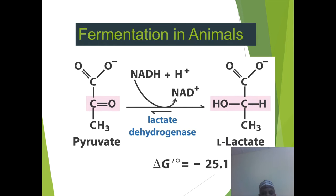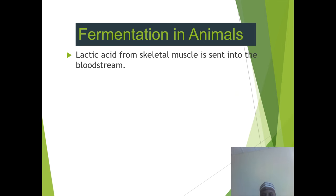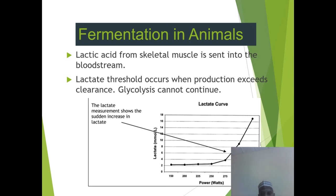For fermentation in animals, pyruvate is converted into lactate. Lactate dehydrogenase uses NADH to produce NAD+ and converts pyruvate to L-lactate. The delta G standard is minus 25 kJ per mole. A graph shows that lactate levels increase suddenly with increasing exercise intensity.